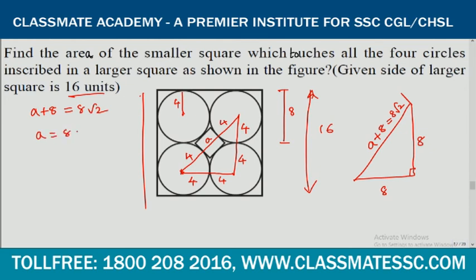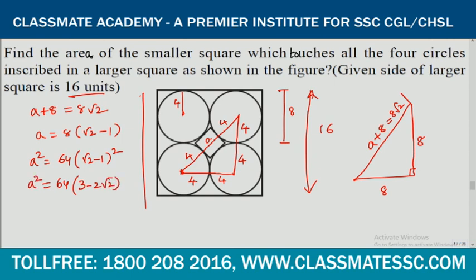From A equals 8 times (root 2 minus 1), we get A squared equals 64 times (root 2 minus 1) squared. Expanding: 64 times (2 plus 1 minus 2 root 2), which equals 64 times (3 minus 2 root 2). So the area of the smaller square is 64(3 minus 2 root 2) square units.